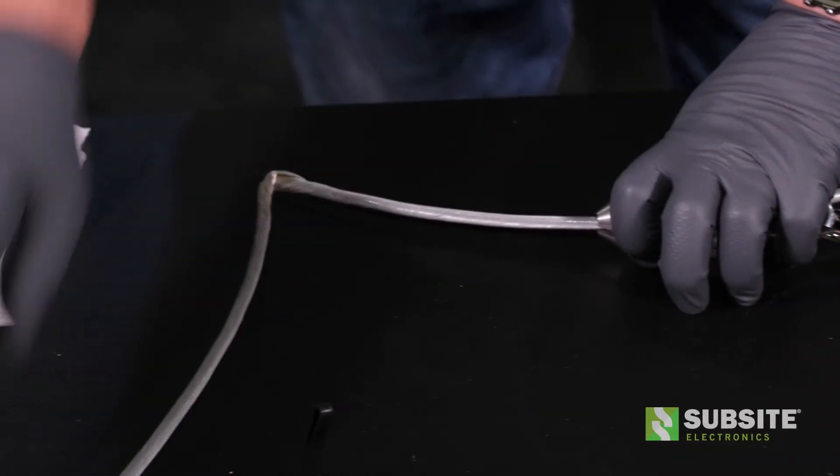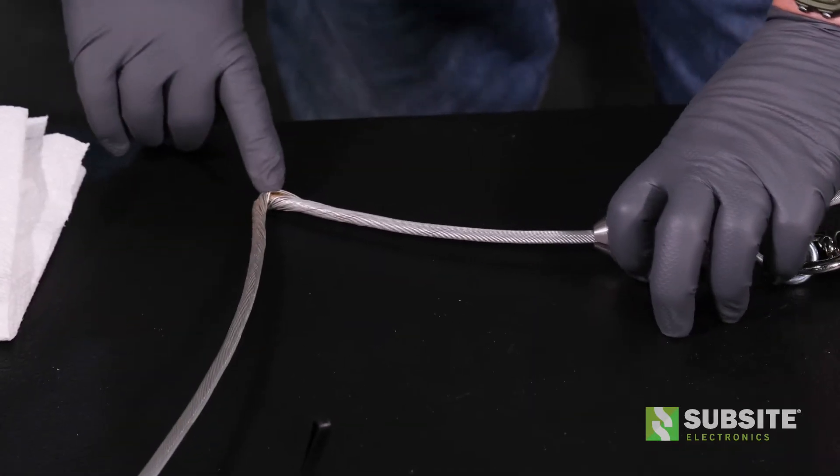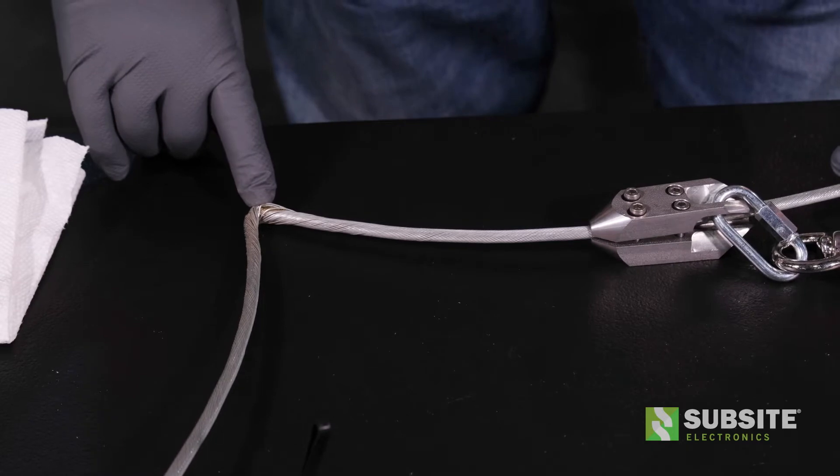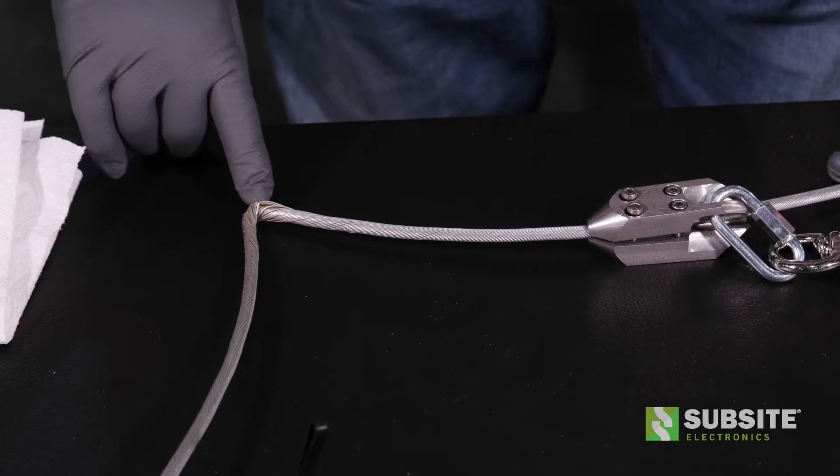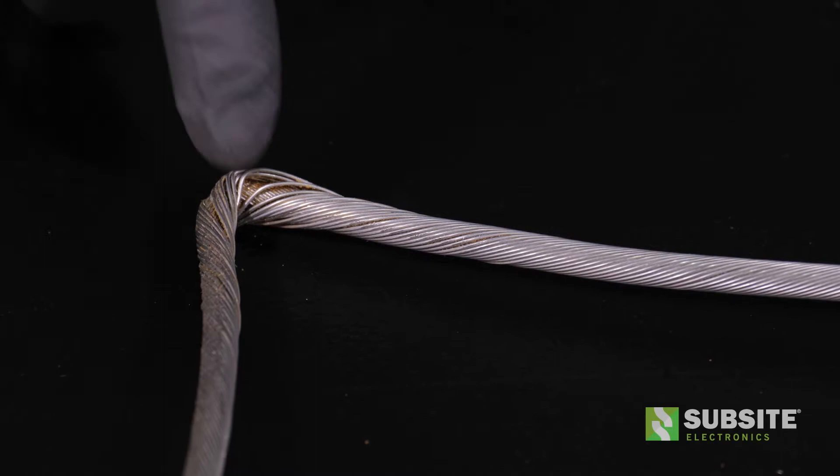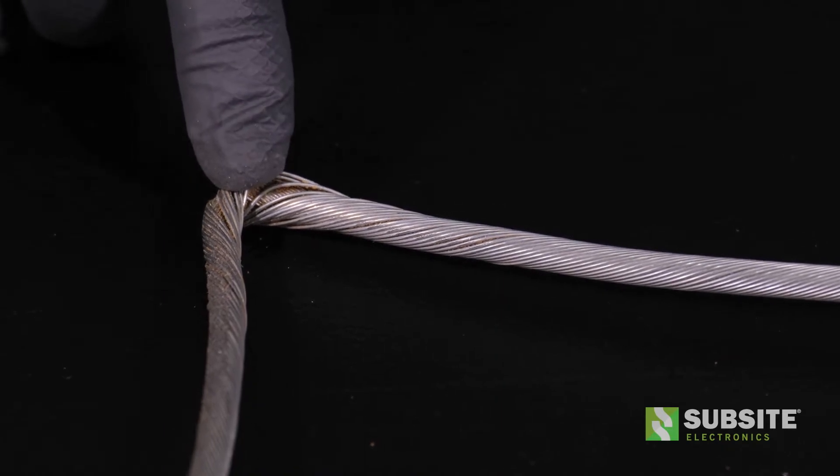First, identify the damaged portion of the cable that needs to be removed. Damaged cable is defined as an electrical break or physical damage to the cable that causes the camera to lose connection. This damage is commonly caused by a kink in the cable within a few feet of the bullet.